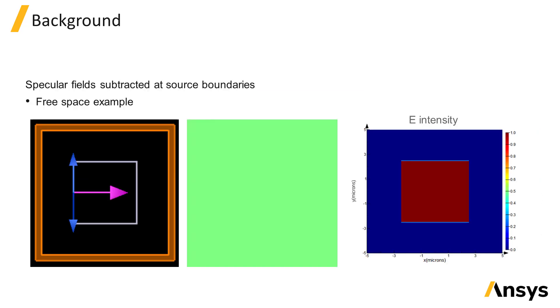To get a better idea of how the source works, it's useful to consider what happens in the simple case when the source is injected in free space with no scattering objects, as shown in this movie.